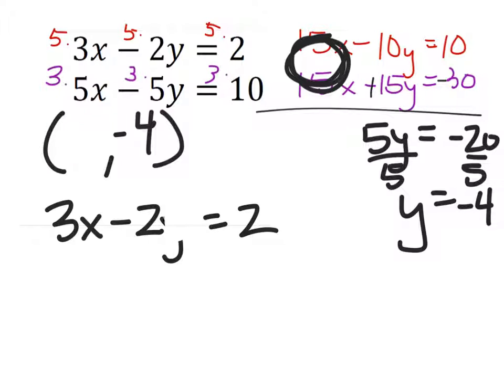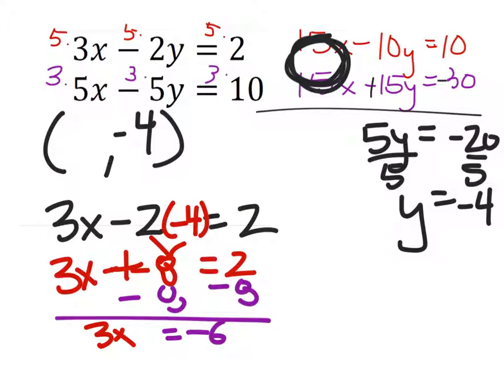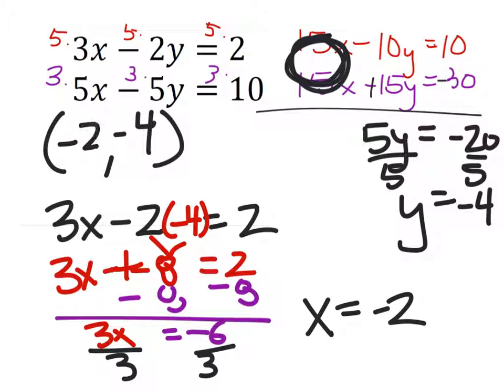3x minus 2y equals 2. But, instead of y, since we think it's negative 4, I'm going to replace it with negative 4 and solve. 2 times negative 4 is negative 8. So, 3x minus negative 8 equals 2. We'll make that a plus. Then, we'll subtract 8 from both sides. And we have 3x equals negative 6. Dividing both sides by 3 tells us that x is negative 2.